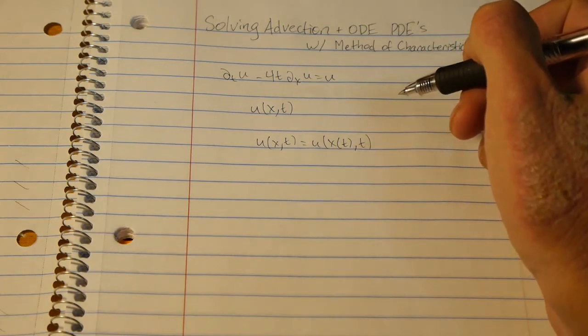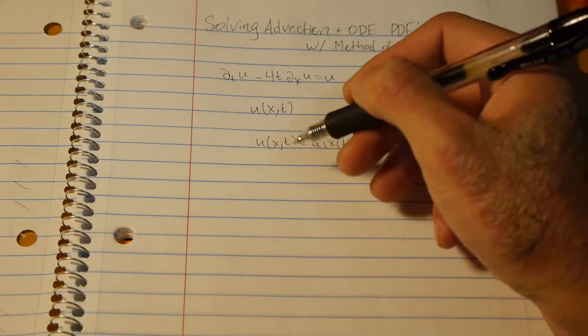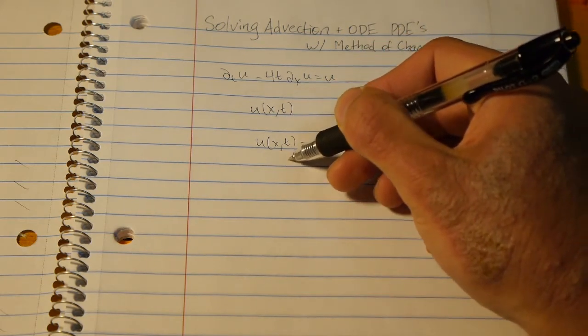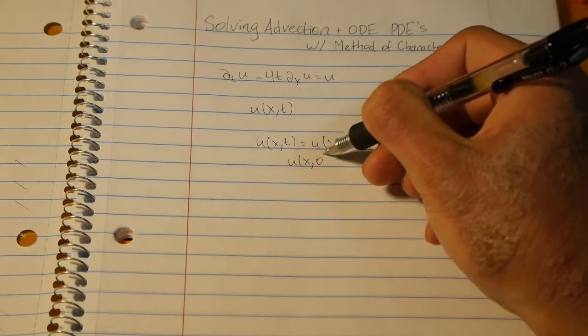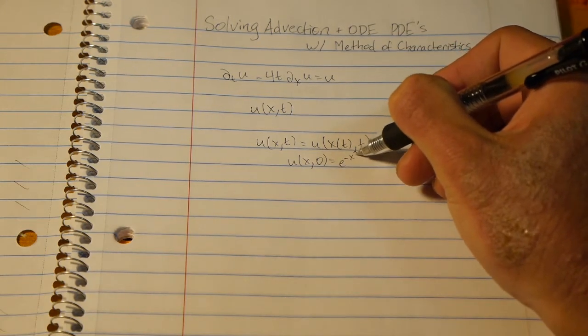Now from here we also are given the initial condition u(x,0) equals e to the negative x squared.